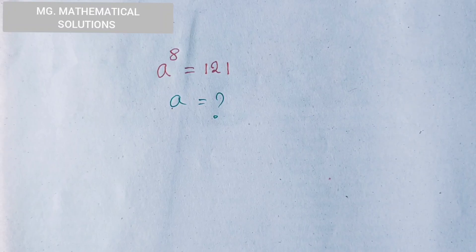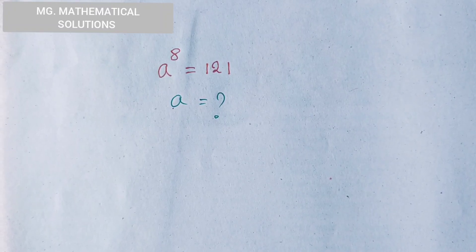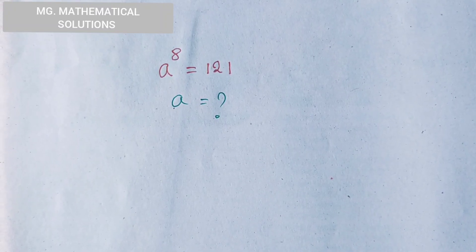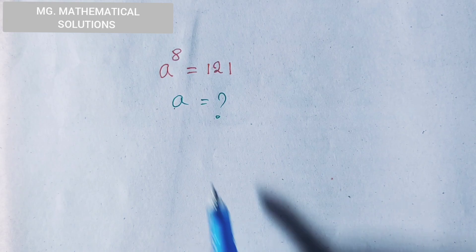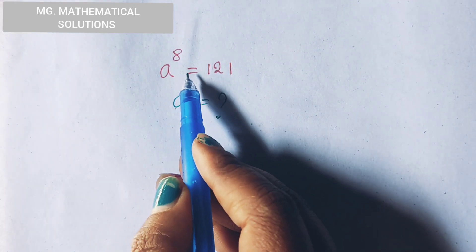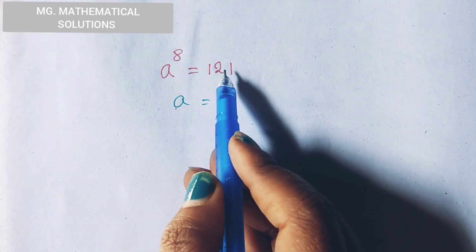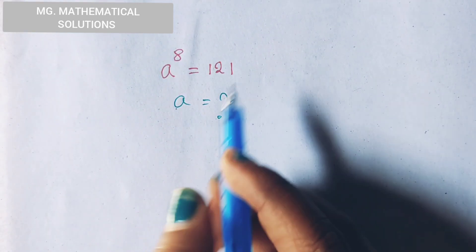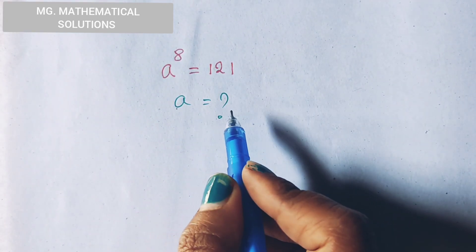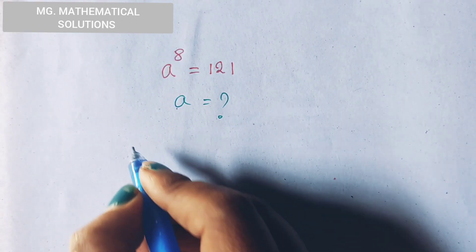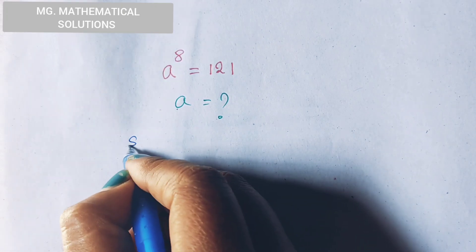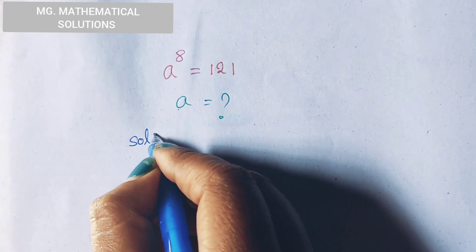Hello students, today I solve a nice math olympiad problem: a to the power 8 equal to 121. Then a equal to what? Let's see how to solve.